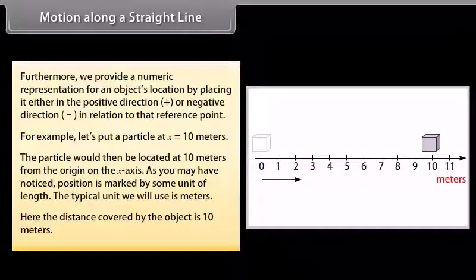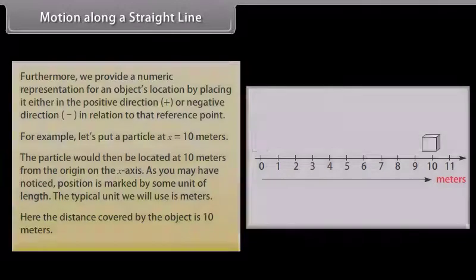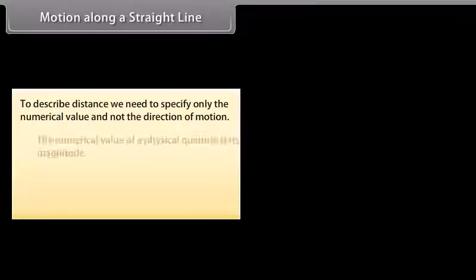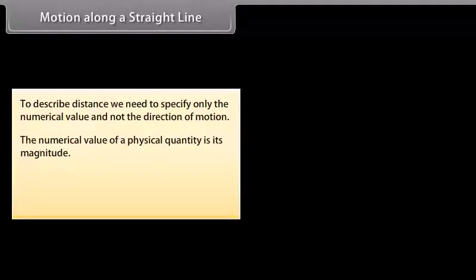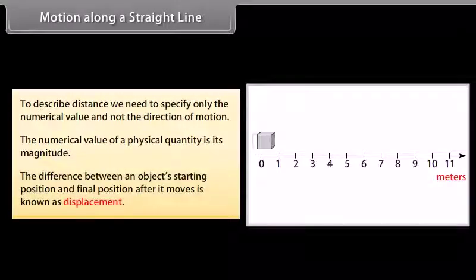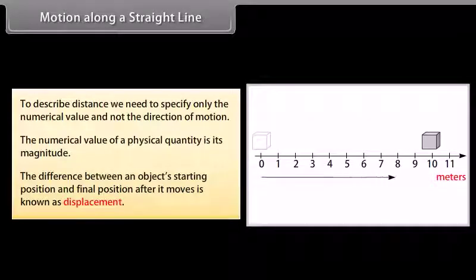Here the distance covered by the object is 10 meters. To describe distance, we need to specify only the numerical value and not the direction of motion. The numerical value of a physical quantity is its magnitude. The difference between an object's starting position and final position after it moves is known as displacement.